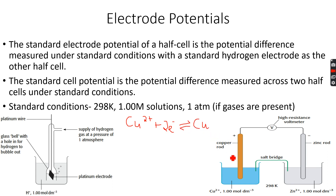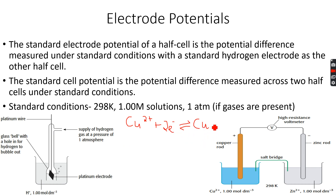The copper electrode contains Cu atoms which keep losing electrons and forming Cu²⁺ ions that go into solution. At the same time, Cu²⁺ ions in solution keep accepting electrons and forming copper metal back on the electrode. This is an equilibrium that exists between Cu²⁺ ions and Cu metal.